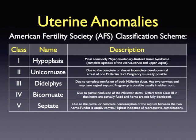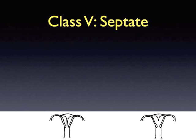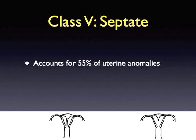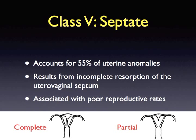The final anomaly to discuss involving failure of proper resorption of tissue during uterine formation may lead to either a septate or arcuate uterus. A class 5 uterine anomaly is a septate uterus. Septate uteri account for 55% of uterine anomalies and result from incomplete resorption of the utero-vaginal septum. Serosal indentation may also be seen, but if the indentation is greater than 1 cm, the uterus is considered bicornuate. Studies show a positive correlation between the completeness of the septum and the risk of pregnancy failure, though the length of the septum does not seem to increase complication rates.